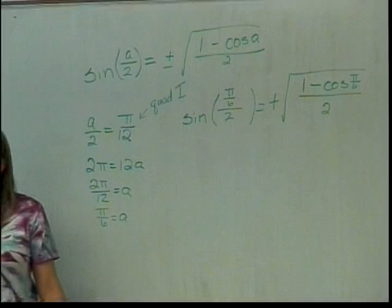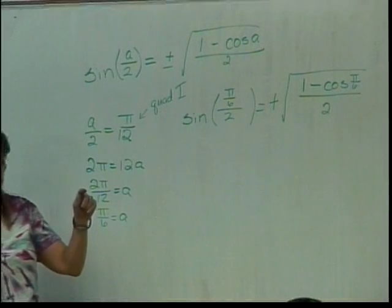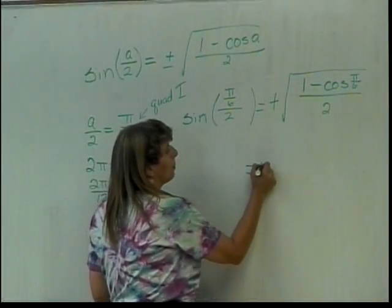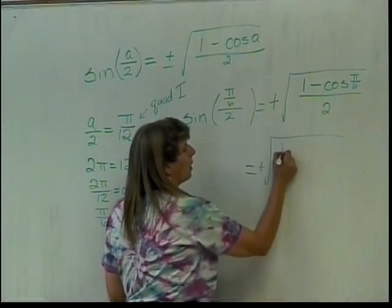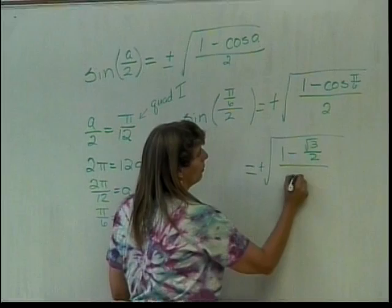So what's the cosine of pi over 6? Radical 3 over 2. So this is the positive square root of 1 minus radical 3 over 2, all over 2.